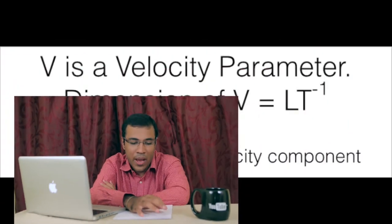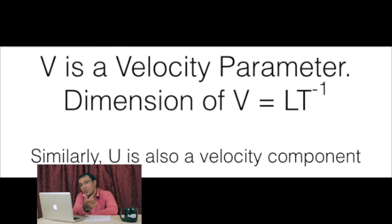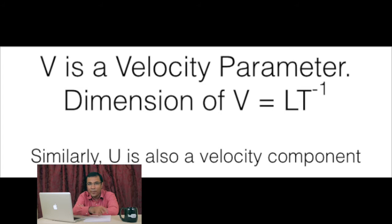V is a velocity component on the LHS, so its dimensional formula is L T power minus 1. Coming to the RHS, U is also an initial velocity component, so that is also L T power minus 1.